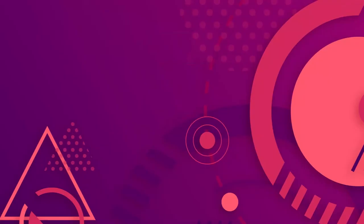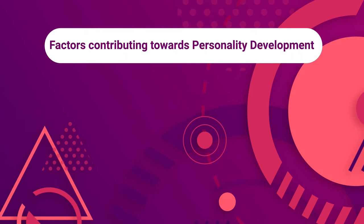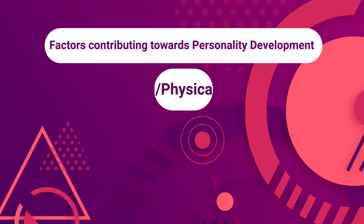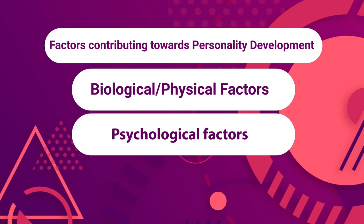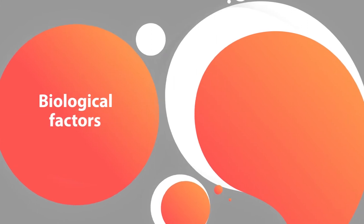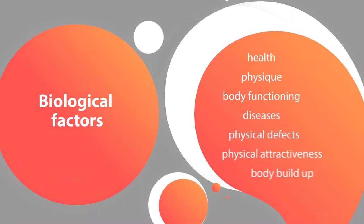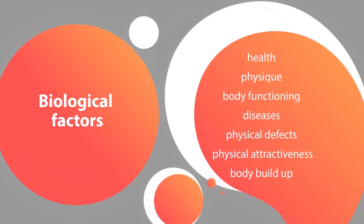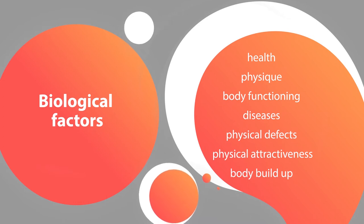There is an inner personality that guides and controls someone's behavior. Factors which contribute towards personality development have been mainly categorized into three types: biological or physical factors, psychological factors, and environmental determinants. Biological or physical factors are related to health, physique, body functioning, diseases, physical defects, physical attractiveness, and body build. Body build has a direct effect on personality and is mainly categorized into three types: endomorphs (round and fatty), ectomorphs (tall and thin), and mesomorphs (strong and muscular).